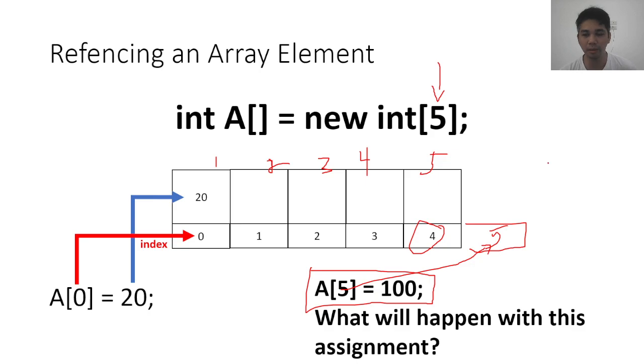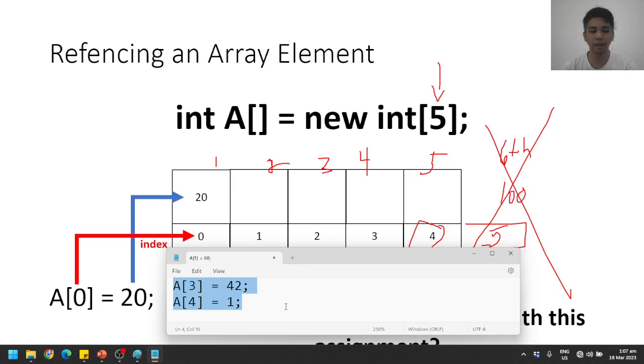This will be the sixth element. And we are trying to assign 100, right? But this one is actually not possible. Again, because the length of the array only has 5 elements. This one, a index 5, is actually non-existing. So if the container is non-existing, it will actually produce an error. What kind of error? The error name is index out of bounds.